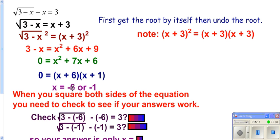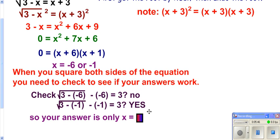Take negative 6, plug it in. Does the left-hand side really simplify to 3? No — you'd get the square root of 9, which is 3, plus 6 is 9. That's not 3. So try negative 1: you get the square root of 4, which is 2, plus 1, which is 3. Yes, it works. So of the two answers, only one works. Your answer is only x equals negative 1.